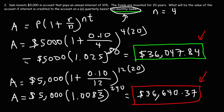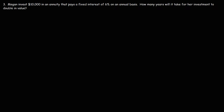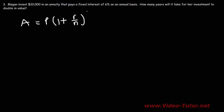The difference is not that great, but over many years it could be significant. Now let's move on to our last problem: Megan invests $10,000 in an annuity that pays a fixed interest of 6% on an annual basis. How many years will it take for her investment to double in value? Interest is credited annually, so N is 1, and her original investment is $10,000. We're looking for T.